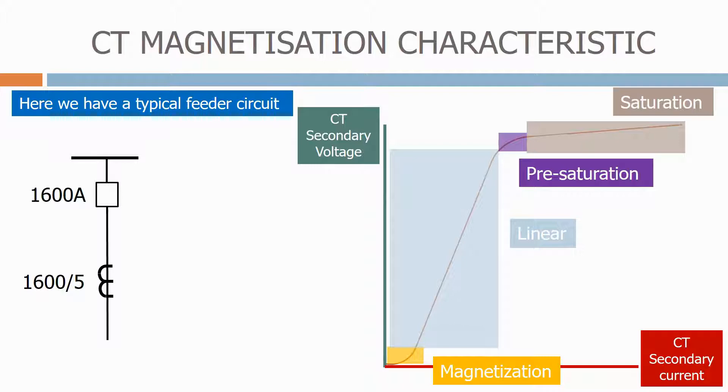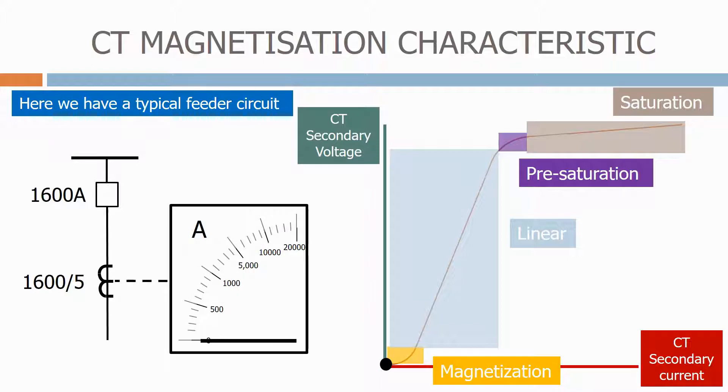Here we have a typical feeder circuit. Let's now connect the current transformer to an ammeter so we can measure the current. Let's now close the circuit breaker.